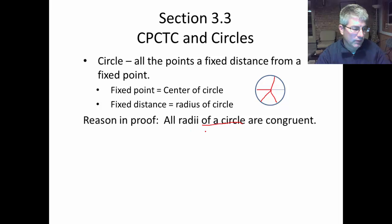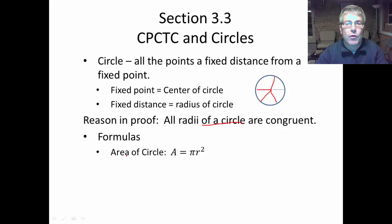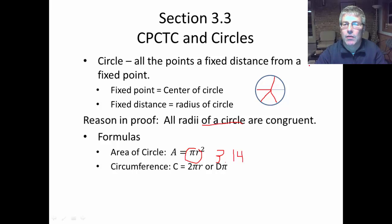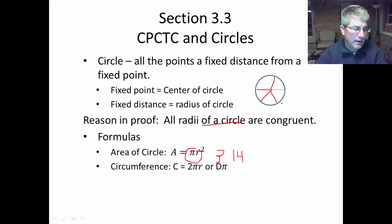We'll also work with some formulas with circles. You should be familiar with the formula for the area of a circle: area equals pi times the radius squared. Pi is approximated by 3.14, but I recommend using the pi key on your calculator. Circumference is 2πr, or diameter times pi, where the diameter is a chord that extends through the center of the circle from one side to the other.